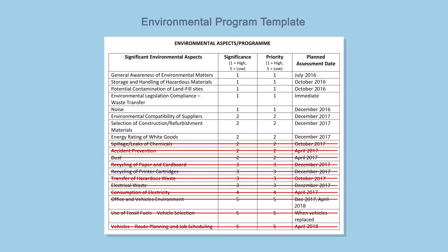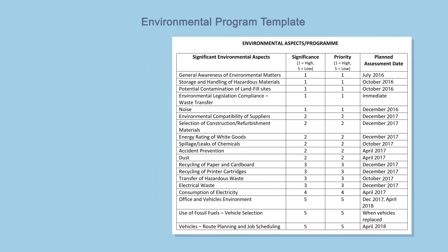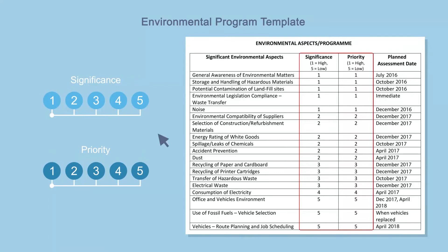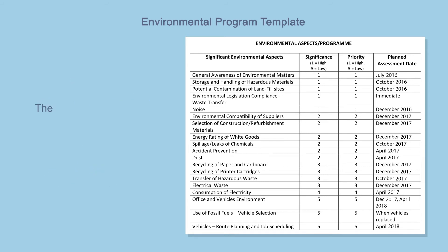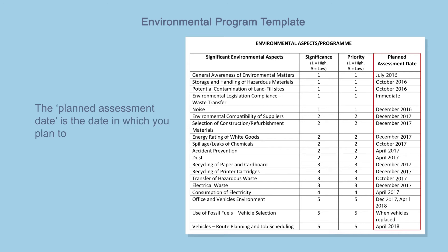As you can see, there are columns for significance and priority. The significance is the significance of that aspect to the organisation itself. The priority is the speed in which you will deal with it. You might expect them to be the same, but this is not always true due to the prioritisation of quick wins. The planned assessment date is the date in which you plan to reassess the programme again.